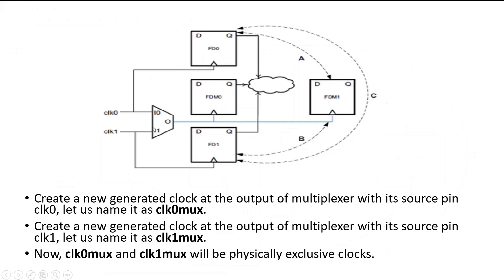The purpose of this trick is to make our timing closure easy, with lesser pressure given to the PNR or placement-and-routing tool and the timing analyzer tool. Now let me reveal the trick. If you look at the output of this multiplexer, either clock zero or clock one can pass at its output, and that output is applied to the partial design — that is, FDM zero and FDM one. The trick is I will redefine the clocks at the output of the multiplexer. First step: create a new generated clock at the output of the multiplexer with its source pin clock zero, and I am redefining that as clock zero mux using the create_generated_clock constraint. Similarly, create a new generated clock at the output of the multiplexer with its source pin clock one, and name it clock one mux.